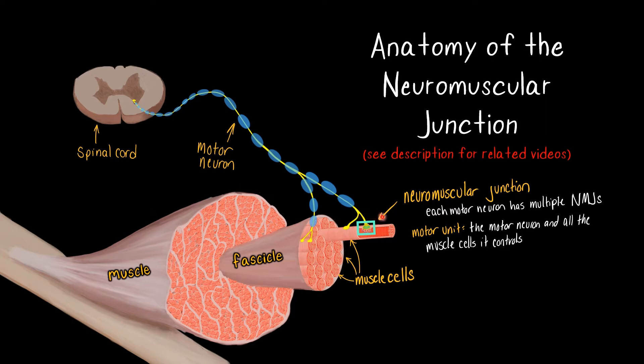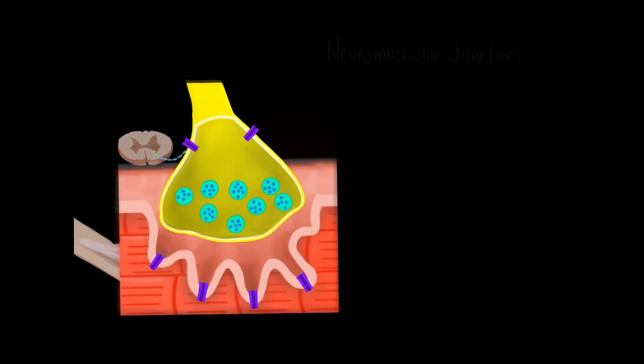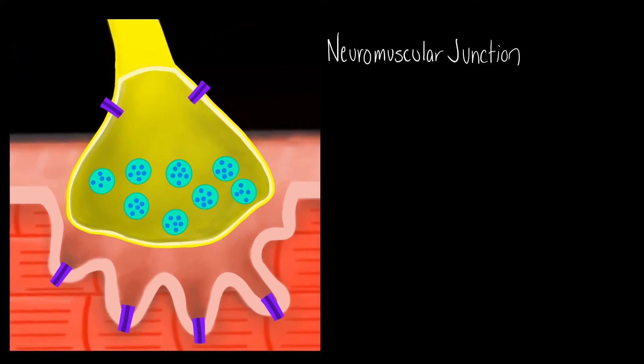All right, so now that we're kind of clear on where the neuromuscular junction is and its broad functioning, we're going to look at this one single neuromuscular junction a little bit more closely. So the neuromuscular junction is a type of a synapse. If you've heard of a synapse before, you might have heard about it in relation to connections in your brain, a neuron-to-neuron connection. But this nerve-to-muscle connection is also a synapse.